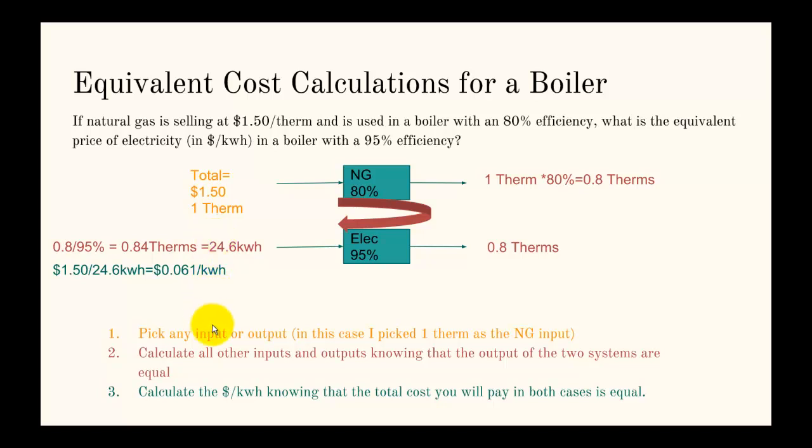Then the last step is to calculate the dollar per kilowatt hour knowing that the total cost you will pay in both cases is equal. Because it's equivalent price, we're going to pay $1.50 no matter what. That's why we take the $1.50 and divide by the 24.6 kilowatt hours. So it's about six cents a kilowatt hour in this case.